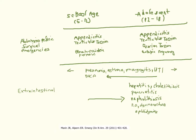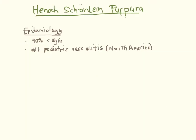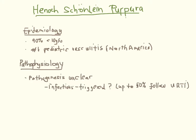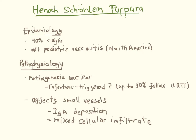Appendicitis remains the number one surgical concern, followed by torsions and ectopic pregnancy. Henoch-Schönlein purpura, or HSP, is not usually surgical but has the potential to be, so it is included here. HSP presents mainly between 3 and 10, and is the most common pediatric vasculitis in North America. Pathogenesis is unclear, but up to half follow an upper respiratory tract infection. Biopsies have shown IgA deposition and mixed cellular inflammation affecting small vessels, especially in four systems.